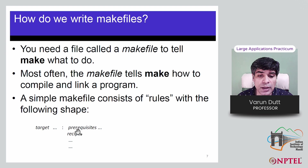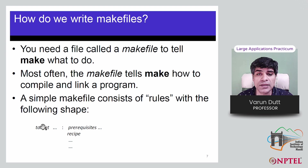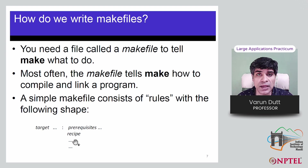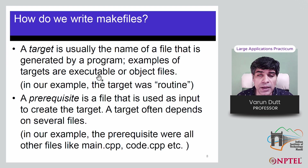A rule generally consists of a target, which could be an executable file to be created; the set of prerequisites, which are the CPP files to be included; and recipes, which are tabbed statements that go from the prerequisites to produce the target, like a g++ command. This kind of structure is used in a makefile and a number of rules with this structure are written.